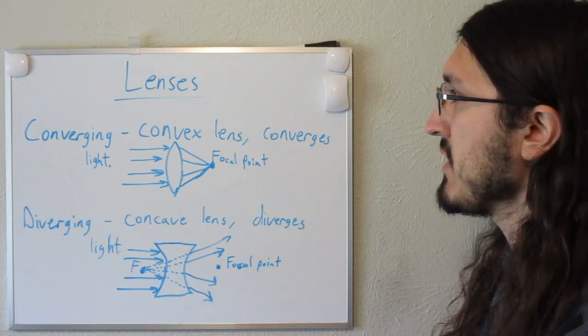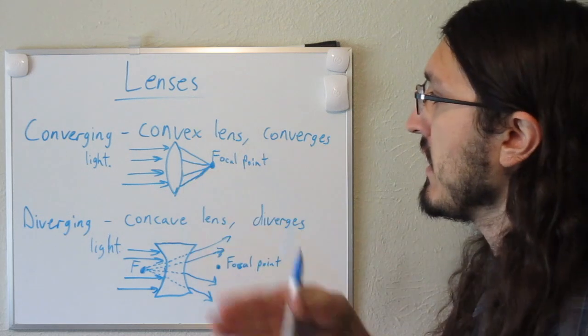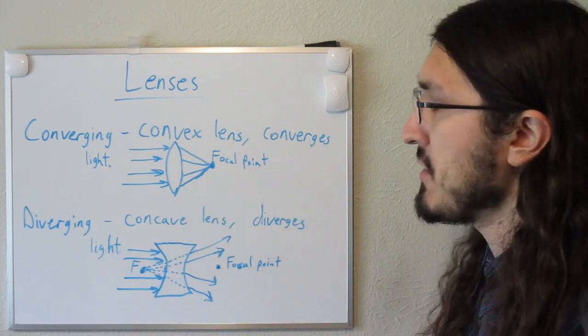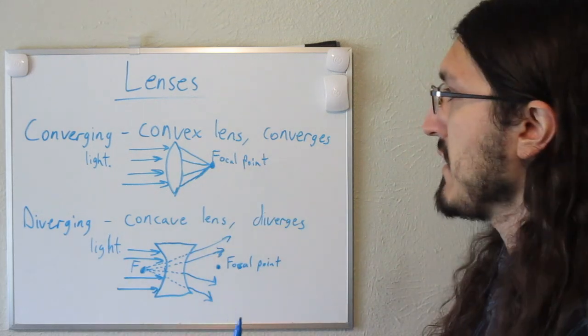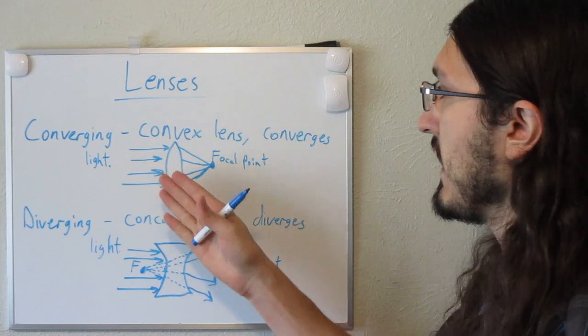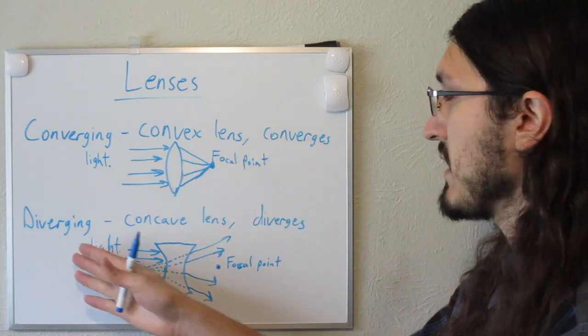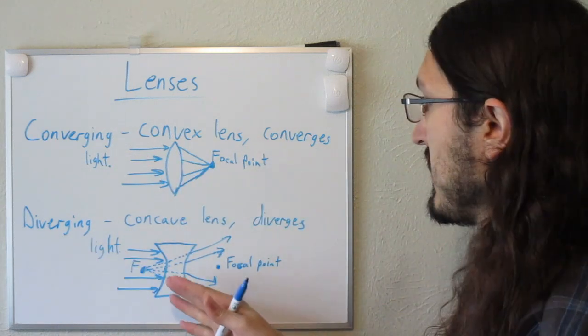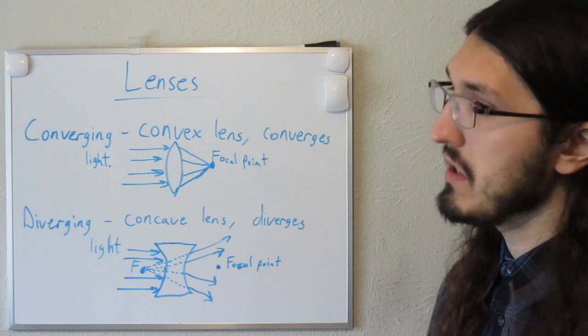This is a good introduction to the differences between converging and diverging lenses. Converging lenses converge the light into a focal point, whereas diverging lenses diverge the light away from that focal point.